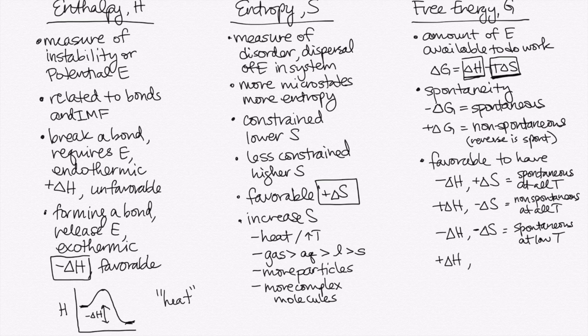In contrast, if we have a positive delta H and a positive delta S, our delta S is going to be helping us out, but our delta H is not. And so now this one will be spontaneous at high temperatures. In other words, if we raise the temperature here, we maximize the impact of this entropy term.